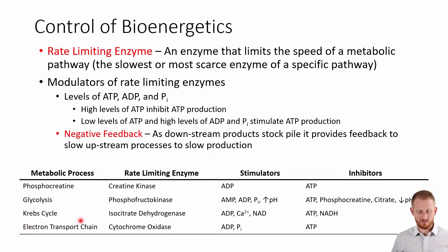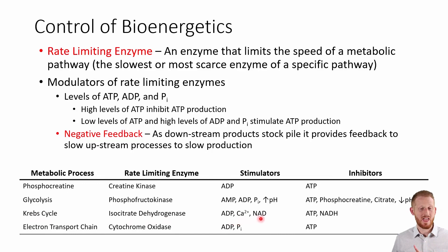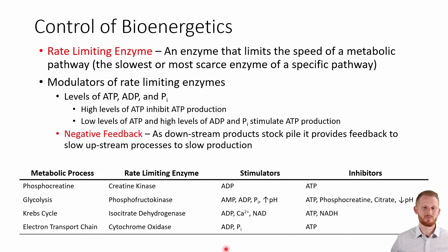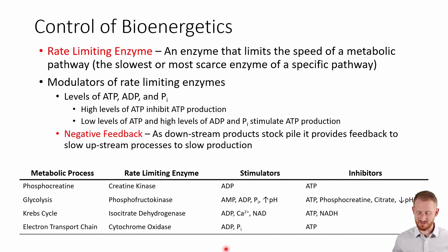For the Krebs cycle, the rate-limiting enzyme is isocitrate dehydrogenase; the stimulators are ADP, calcium, and NAD, and the inhibitors are ATP and NADH. In the electron transport chain, the rate-limiting enzyme is cytochrome oxidase; the stimulators are ADP and inorganic phosphate, and the primary inhibitor is ATP. There are additional molecules that likely stimulate and inhibit each of these processes, but these are the main ones.